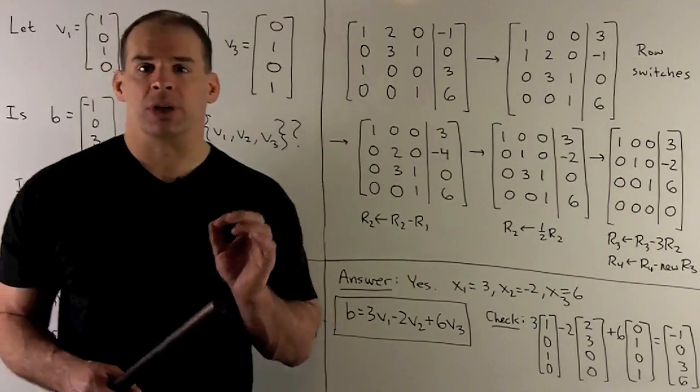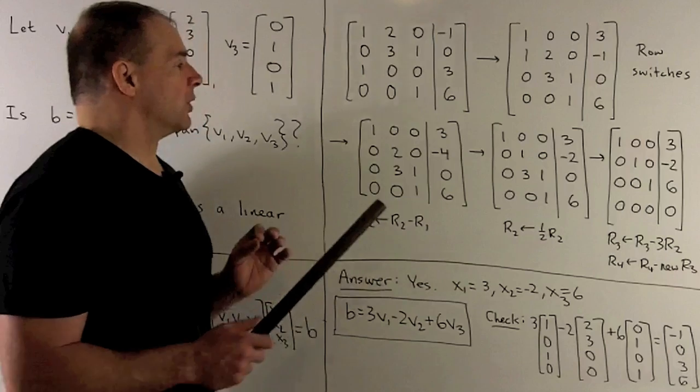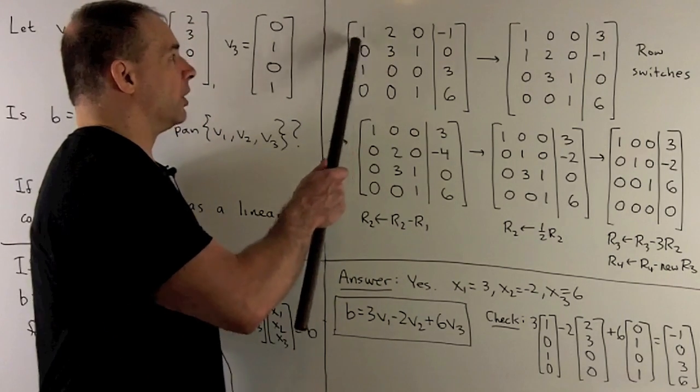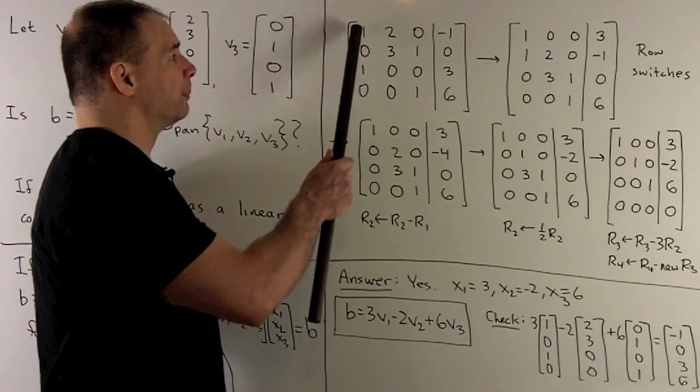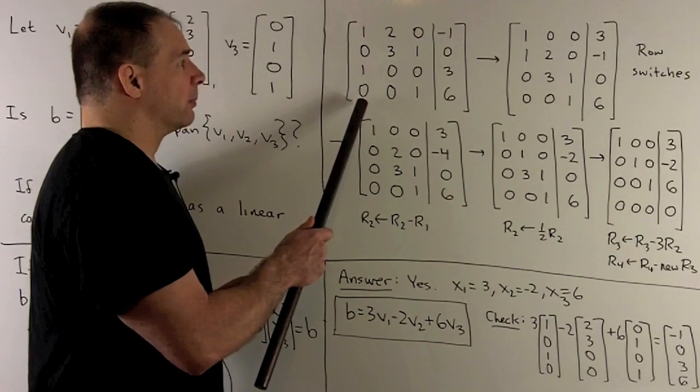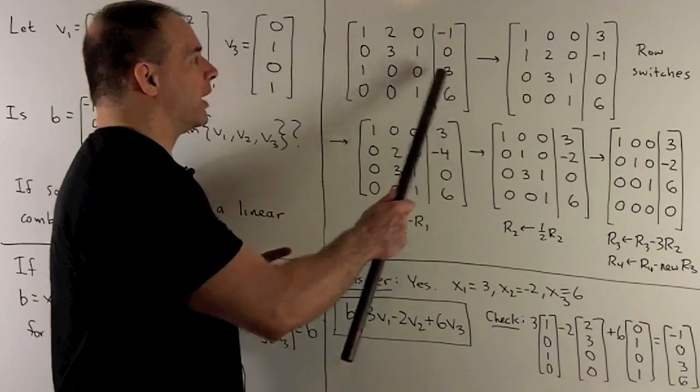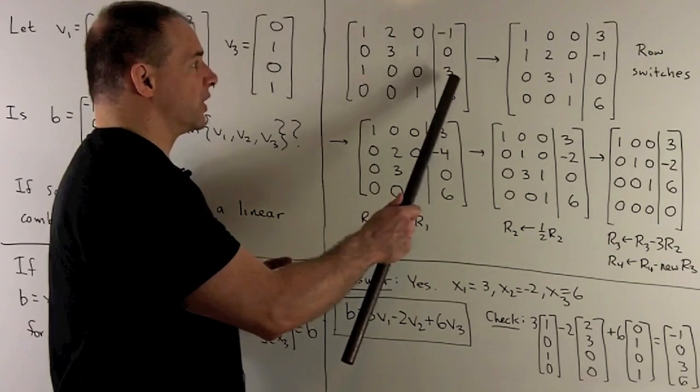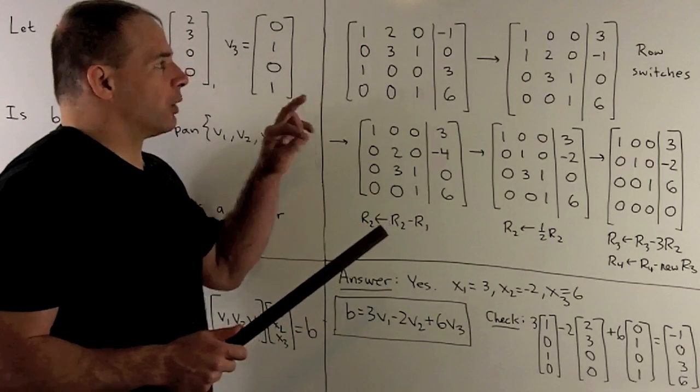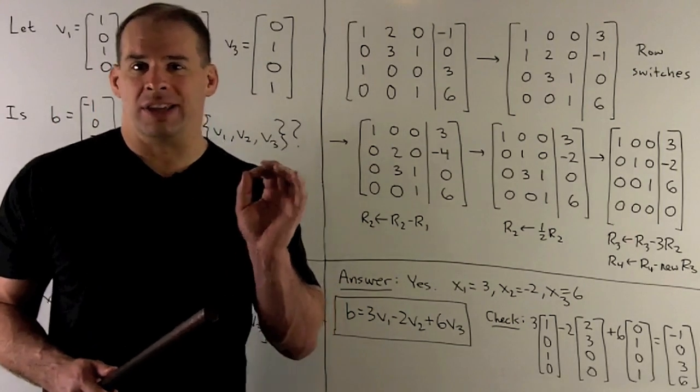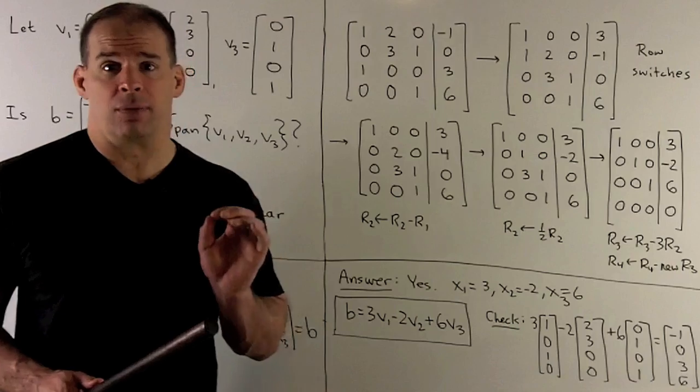Now, my first step is going to be to reorganize. The idea is going to be, first I want a 1 up in our left-hand corner, and I want all zeros beneath. I like the third row better than the first row because it has more zeros in it. So we'll do that switch, and then we'll just switch things around until we get things in a way that's going to lead to a nice row echelon form.